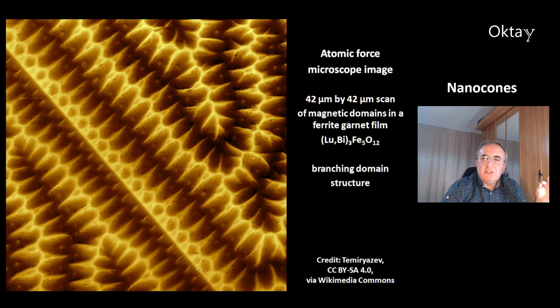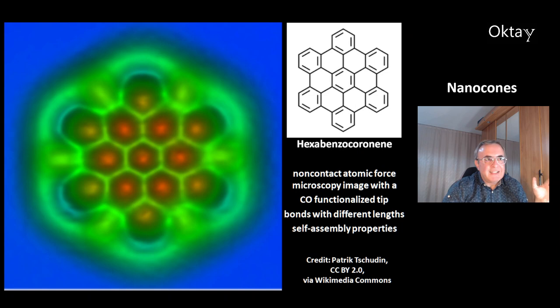This is an atomic force microscope image — a 42 µm × 42 µm scan showing magnetic domains in a ferrite garnet film. That's lutetium bismuth iron oxide. You can see the branching of the domain structure.